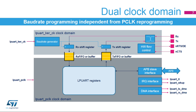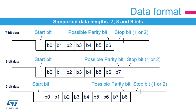The TX and RX pins functions can be swapped, which allows working in the case of a cross-wired connection to another UART. The frame format consists of a set of data bits in addition to bits for synchronisation and, optionally, a parity bit for error checking.